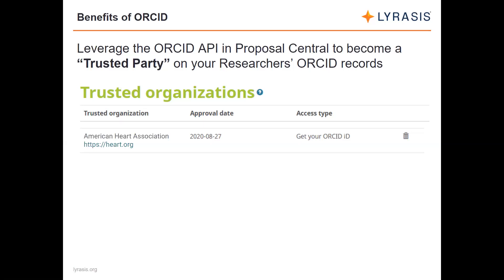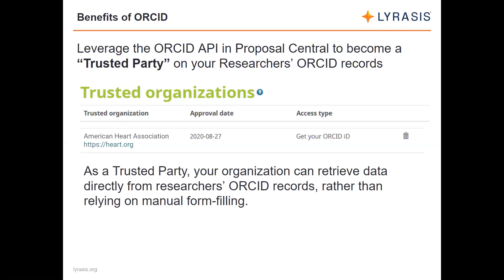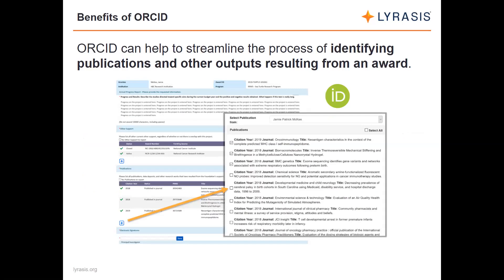Once researchers have connected their ORCID ID and have either Proposal Central or your organization listed as a trusted party on their ORCID record, you can get data about your researchers directly from their ORCID record rather than asking them to manually fill out forms during reporting. In Proposal Central, this is especially helpful in progress reports where researchers must identify publications and other outputs resulting from their funding. With the ORCID connection, researchers can quickly select from a list of publications stored in their ORCID record, click a button to import that information, making the process easier and ensuring data consistency.